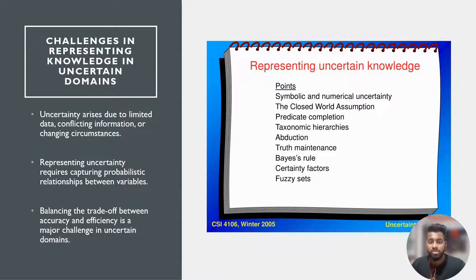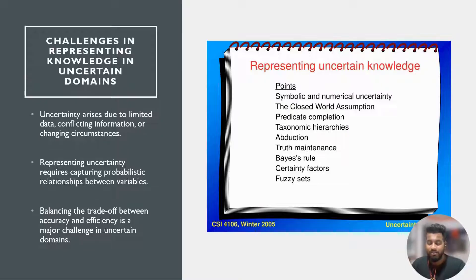Some of the main points to remember here are symbolic and numerical uncertainty, the closed world assumption, predicate completion, taxonomic hierarchy, abduction, truth maintenance, base rule, certainty factor, and fuzzy sets.